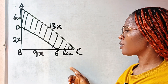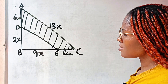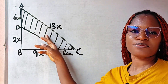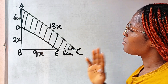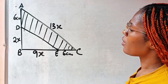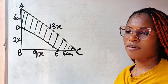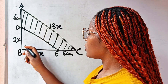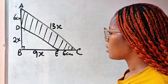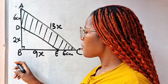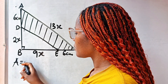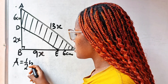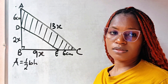So in this geometry question, we are asked to find the area of a shaded portion. First of all, we are going to work with what we have. This is a right-angled triangle. The area of a triangle is half base multiplied by the height.